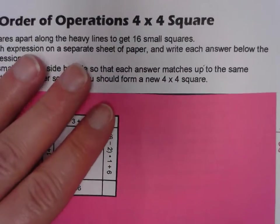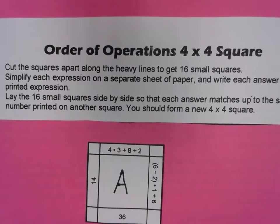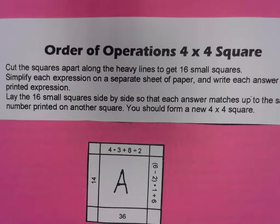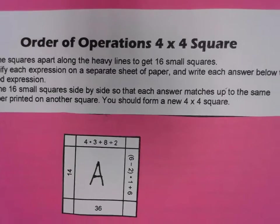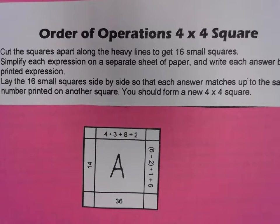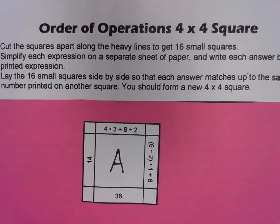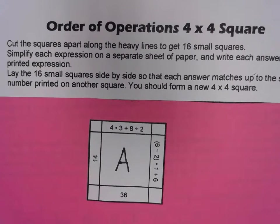There are some rules here: cut the squares apart, which I've already done for you. We're going to simplify each expression on a separate sheet of paper and write each answer below the printed expression. When you're done, lay the 16 small squares side by side so that each answer matches up to the same number printed on another square. You should form a new four-by-four square.